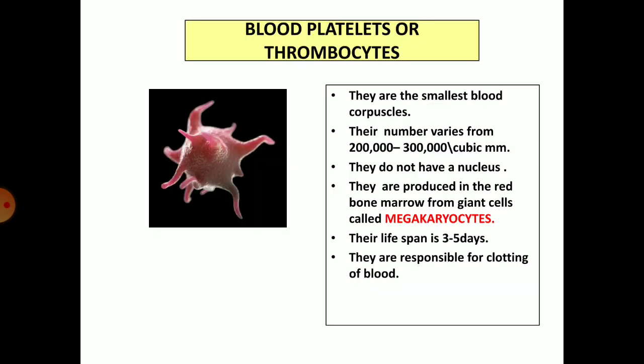Last of all come the blood platelets, or thrombocytes. They are the smallest blood corpuscles. Their number varies from 2 lakhs to 3 lakhs per cubic millimeter. They do not have a nucleus. They are produced in the red bone marrow from giant cells called megakaryocytes. They have a lifespan of round about 3–5 days and are responsible for clotting of blood.